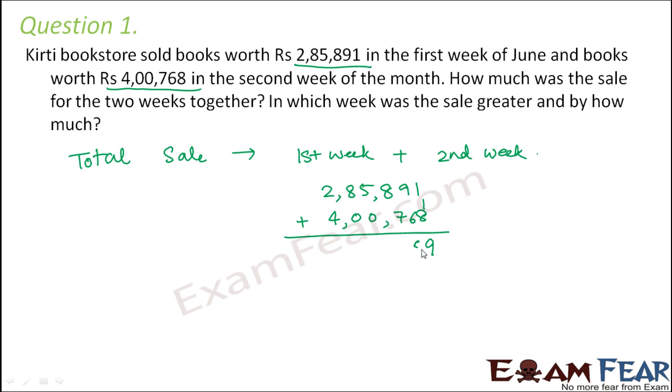8 plus 1 would be 9. 9 plus 6 would be 15. You'll have a carry forward of 1. Again, this would be 6. This would be 8, 6. This would be 6. So rupees 6,86,659 would be the sale for the two weeks together.